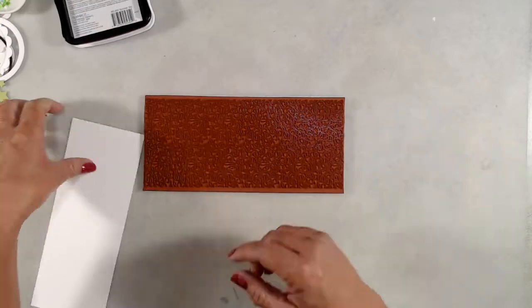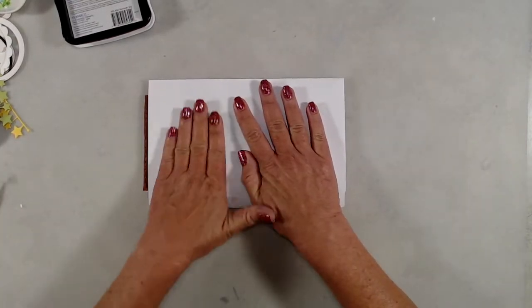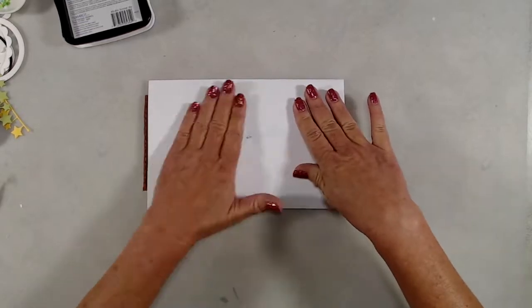I had cut a piece of cardstock that measures three and a quarter by eight and a quarter, and I placed my cardstock on top of the stamp and then with a piece of scratch paper on top of that, I rubbed really well to make sure that I got a nice impression.